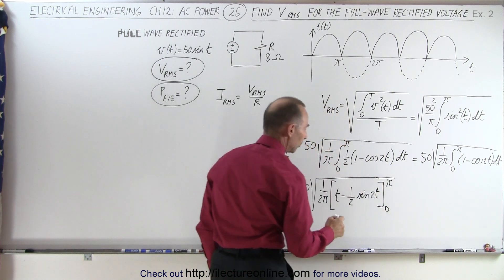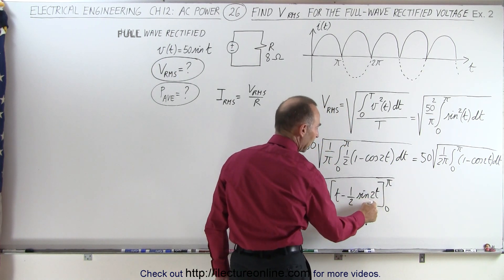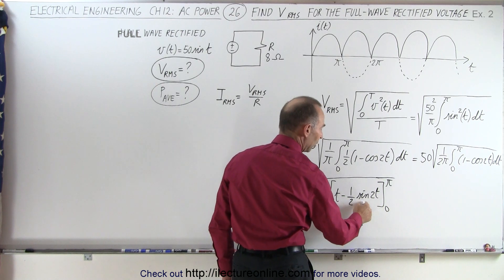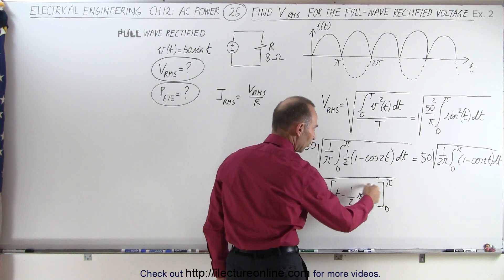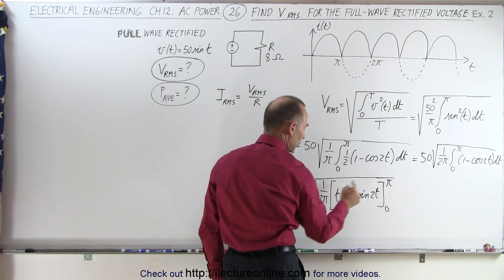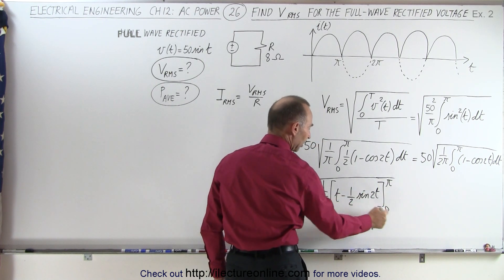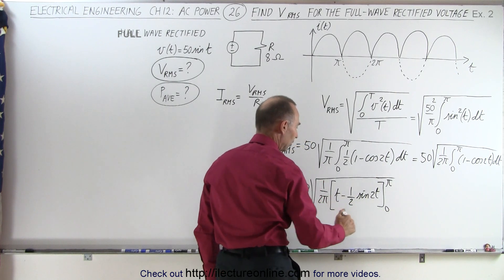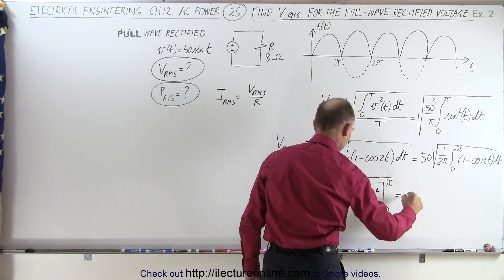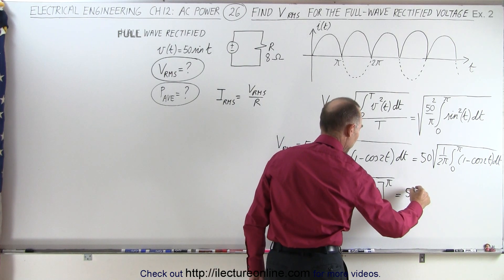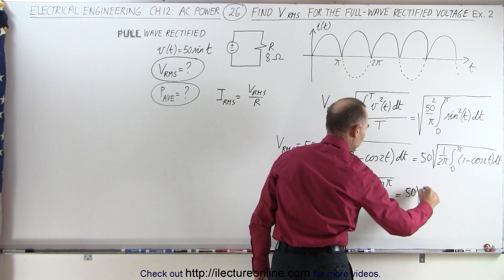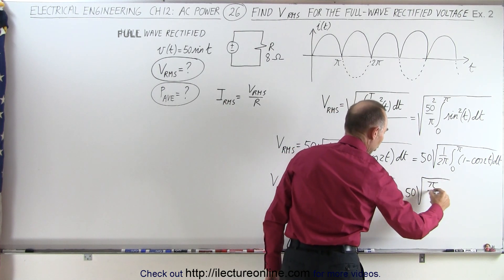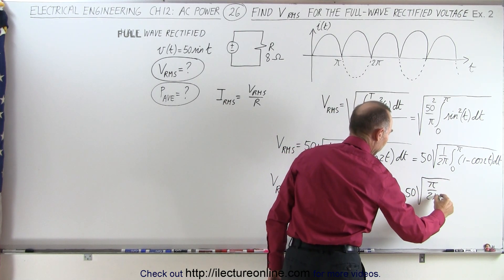The sine of 2pi is zero, so that term goes to zero. Plugging in the upper limit gives pi, and plugging in the lower limit gives zero. So this essentially becomes 50 times the square root of pi over two pi.